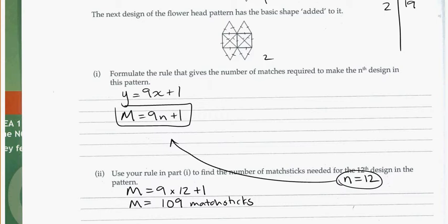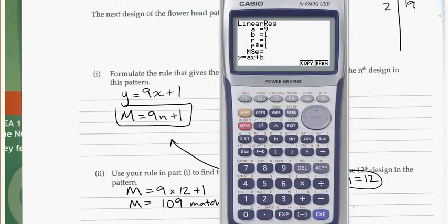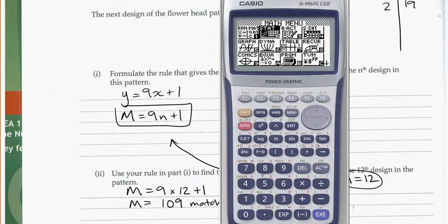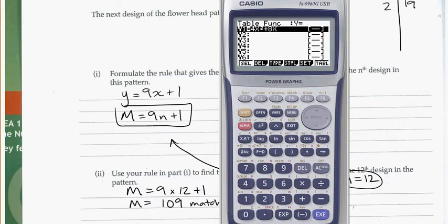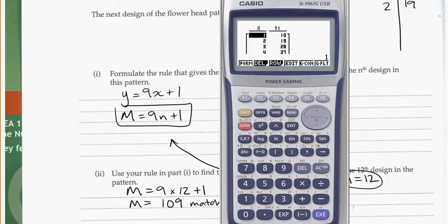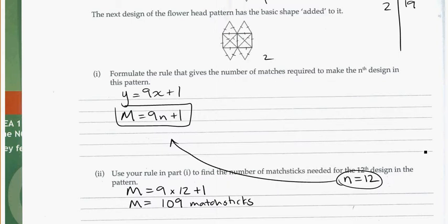But again, if you want to double check that with your calculator, we can go menu into table. Put in the rule that we have, so we can delete the old rule. Now we've got 9X plus 1. Remember, I always recommend just use the X key instead of trying to find the N or the M or whatever. Just keep the variable simple. Go to our table, come down to number 12, and we see for 12 patterns, we need 109 matchsticks, just like we calculated.